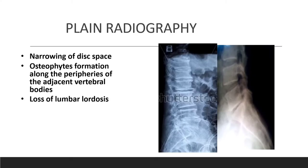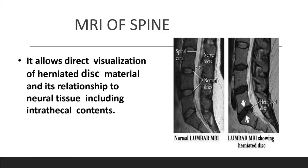Investigations for lumbar disc prolapse: the first is plain radiography or X-ray of the lumbar spine in AP and lateral views. Here you can see the normal disc space is reduced. Narrowing of the disc space is the first finding, followed by the presence of osteophytes due to disc degeneration. Third, there is loss of lumbar lordosis, because due to increased paraspinal spasm the normal lordosis is obliterated.